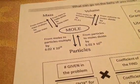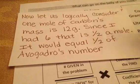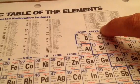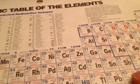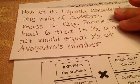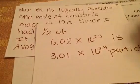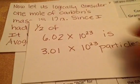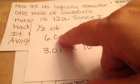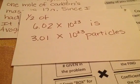We solved that problem, but let's think logically about it. 1 mole of carbon is 12 grams — that's what the molar mass tells us. But my problem gave me only 6 grams, which is half of a mole. That would equal half of Avogadro's number. Avogadro's number is 6.02 times 10 to the 23rd, and half of 6 is 3, half of 0.02 is 0.01 — so half of that is 3.01 times 10 to the 23rd particles.